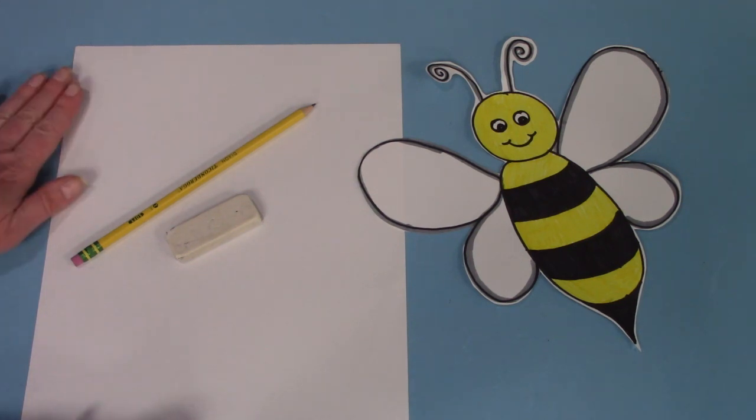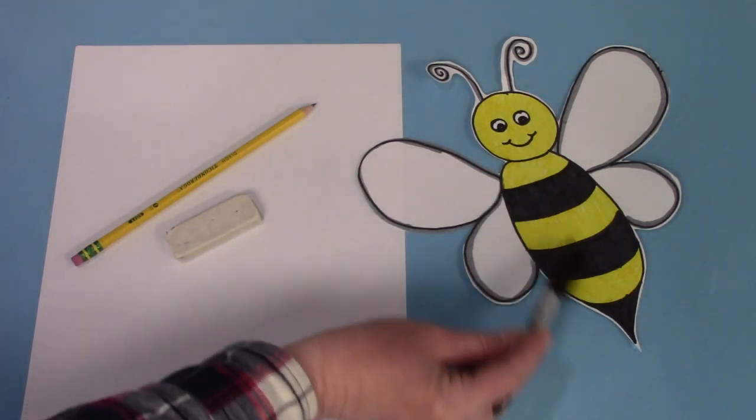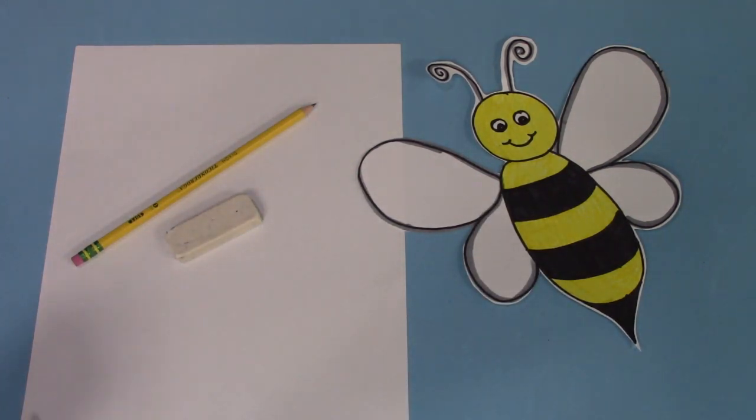You're going to need a piece of paper, a pencil, and an eraser, and then some colors as well. You can use crayons, or markers, or colored pencils.